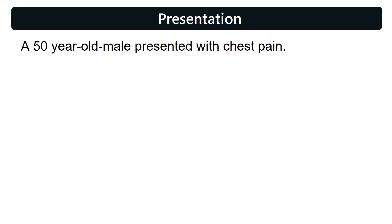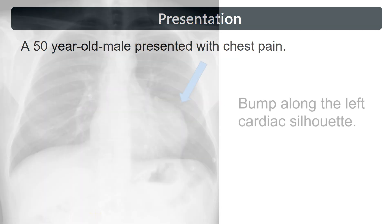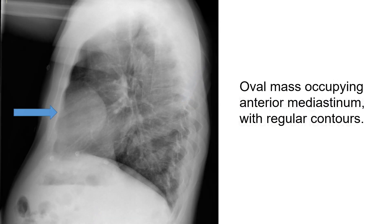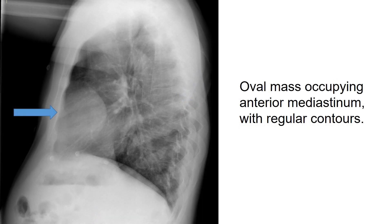A 50-year-old male presented with chest pain. Frontal chest X-ray shows a bump along the left cardiac silhouette. Lateral X-ray shows an oval mass occupying the anterior mediastinum with regular contours.